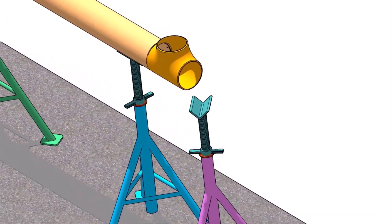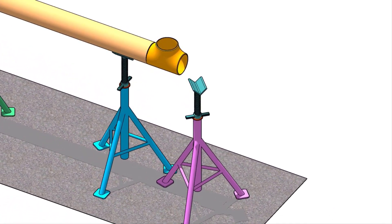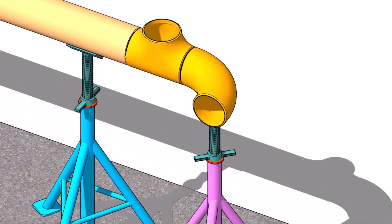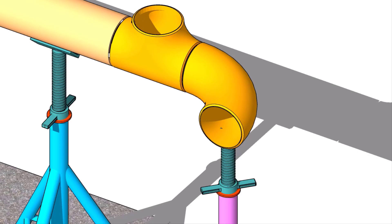Put an adjustable stand near the tee as shown. Put the elbow on the stand. Maintain the level. Put a gap rod in the joint and make sure the gap is equal all around.